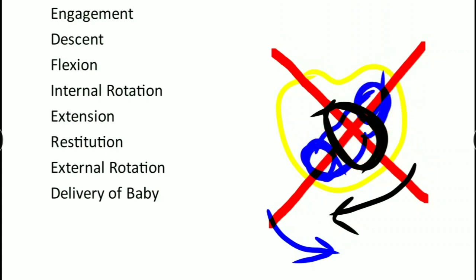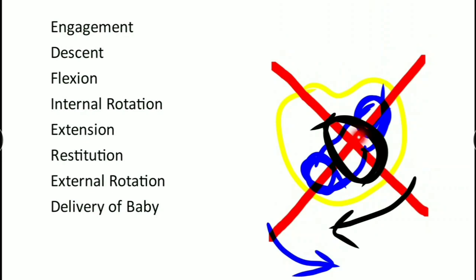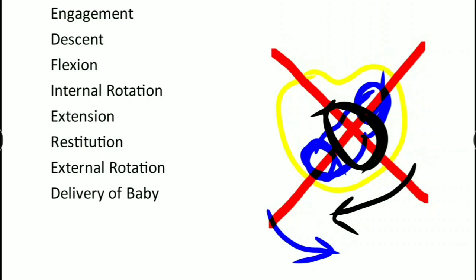The shoulder - the blue structure - we are looking from above, its long axis is just perpendicular to the long axis of the head. That also has to align in the anteroposterior diameter so it can come out. It has to rotate in the opposite direction to align in that diameter. This rotation inside the maternal pelvis is internal rotation.